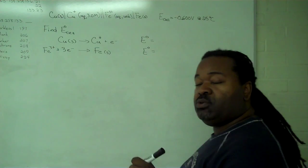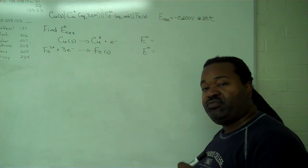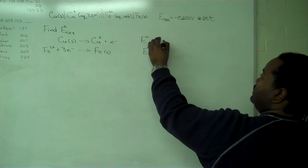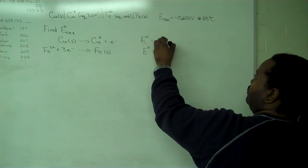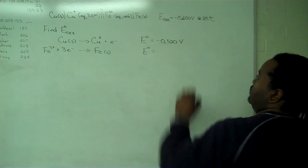So in the table, you'll find it listed as positive 0.520 volts. As oxidation, that becomes negative 0.520 volts.